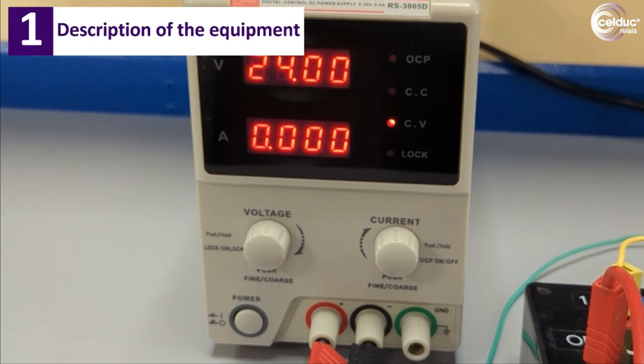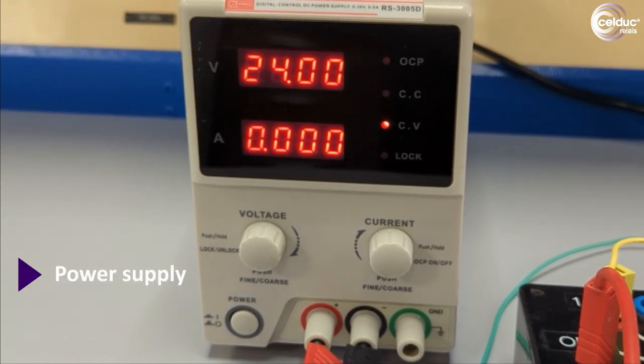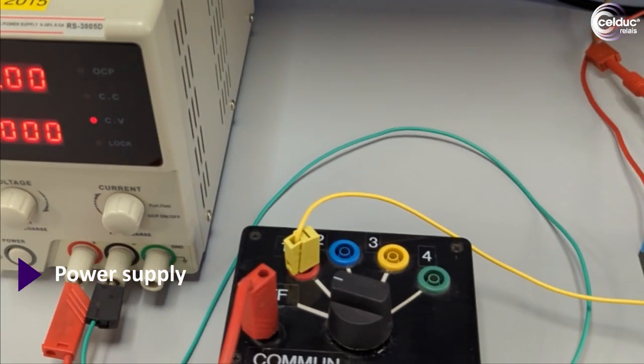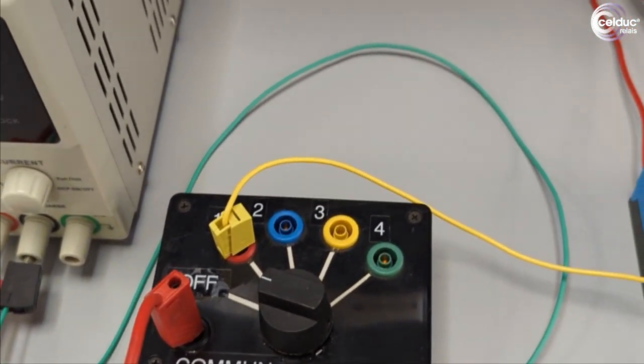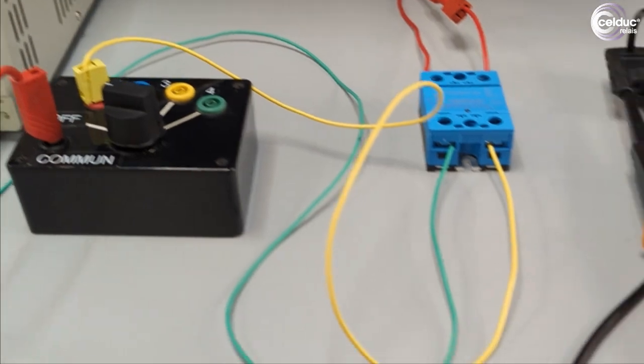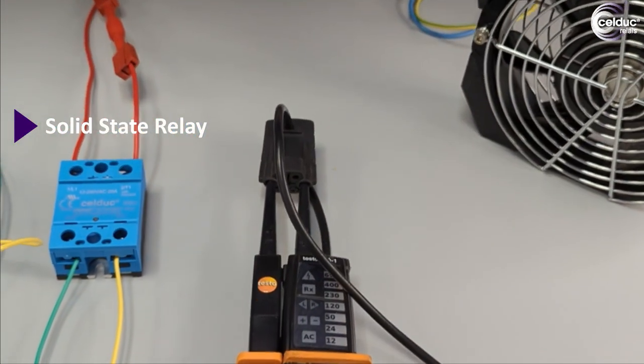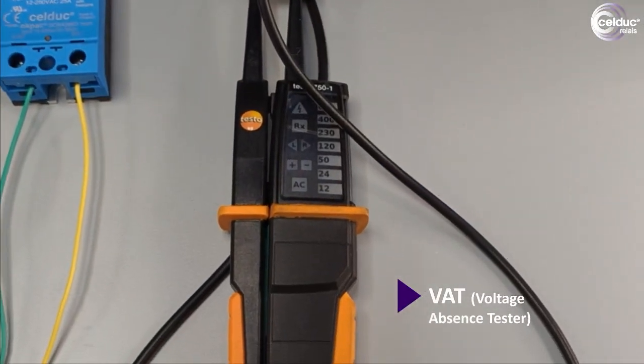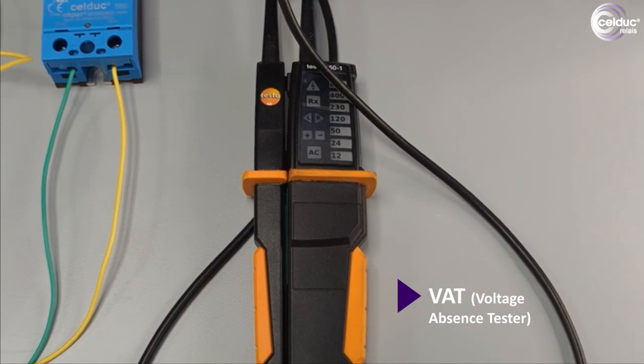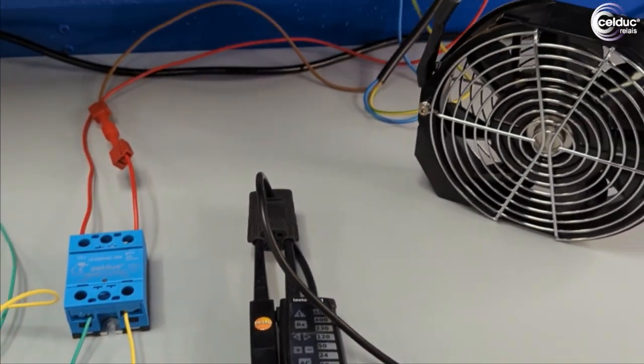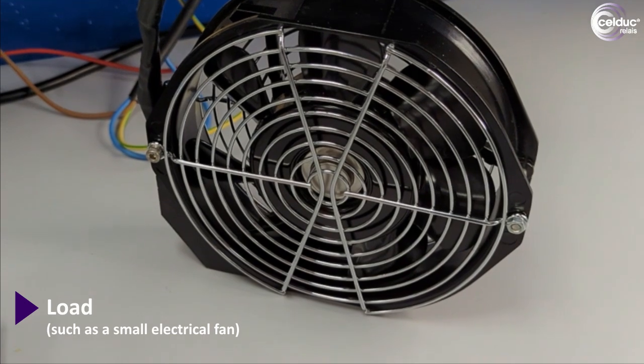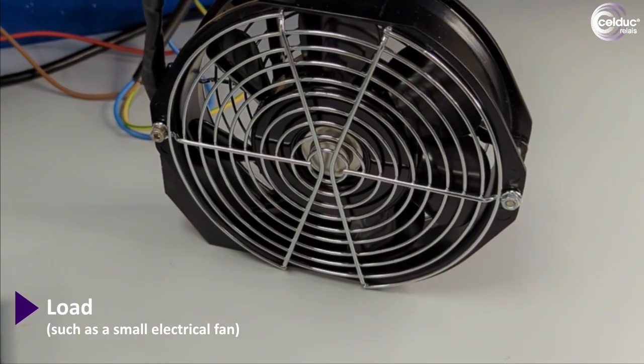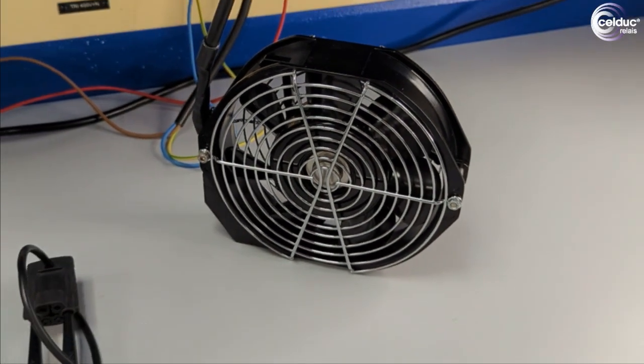To perform the test you'll need a power supply, a control switch, a solid-state relay and a voltage absence tester, and a load such as a small electrical fan which requires a load current above the value specified on the datasheet of the CELDUC SSR.